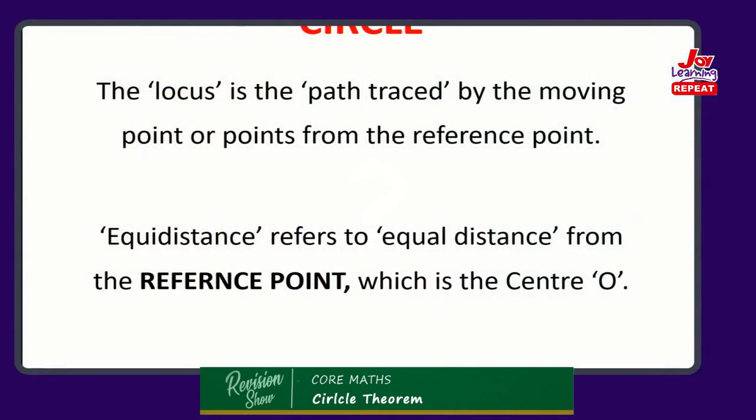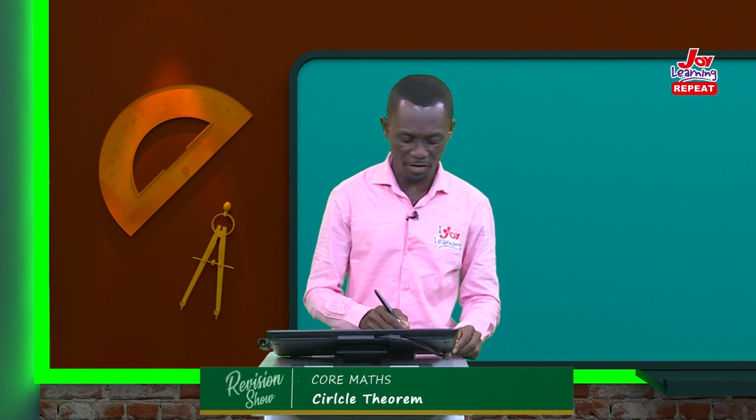As we progress, you will find out that this definition becomes central - pivotal - to what we are doing. A circle is a path traced by a moving point. What does equidistant mean? Equidistance refers to equal distance. So a circle is equidistant from a reference point. Let me show you a few diagrams and hopefully you will get this.